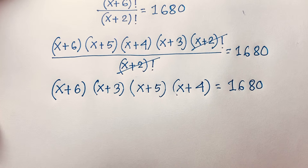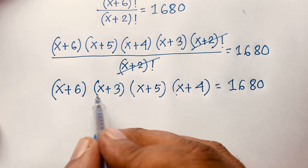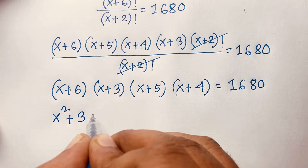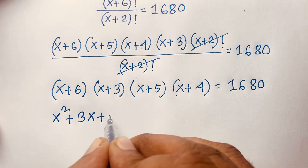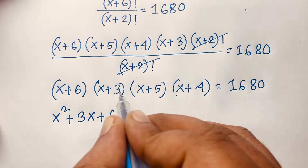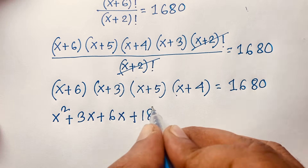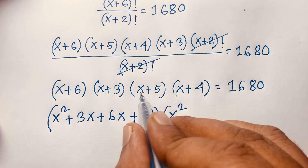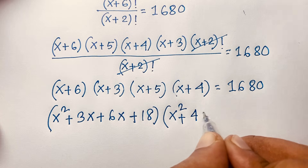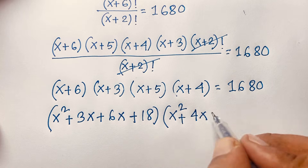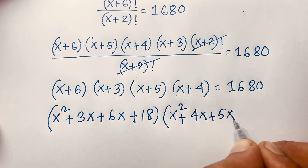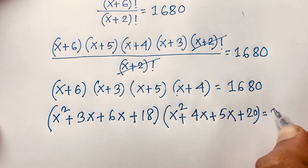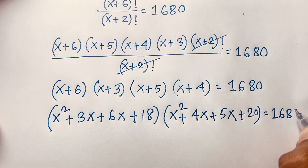Now I multiply the pairs. (x+6) times (x+3): x times x is x², x times 3 is 3x, 6 times x is 6x, and 3 times 6 is 18. Then (x+5) times (x+4): x times x is x², x times 4 is 4x, 5 times x is 5x, and 4 times 5 is 20. This all equals 1680.